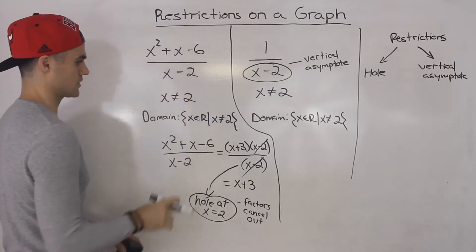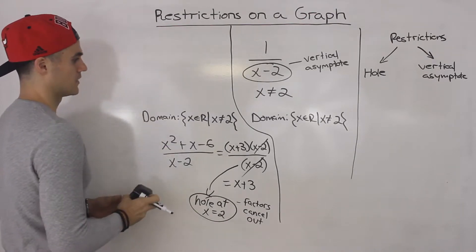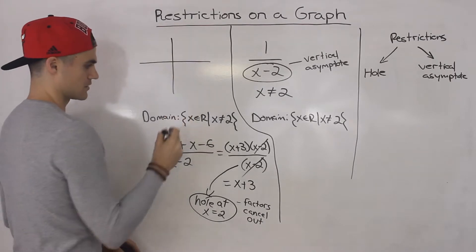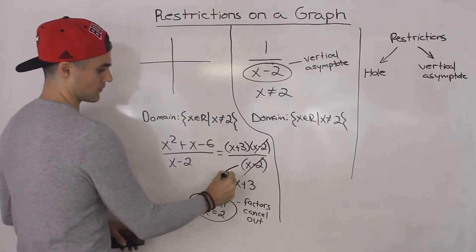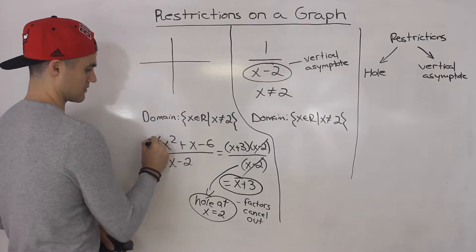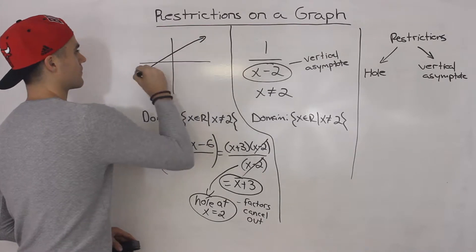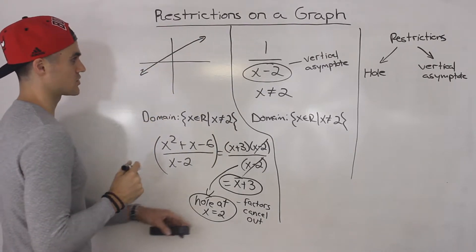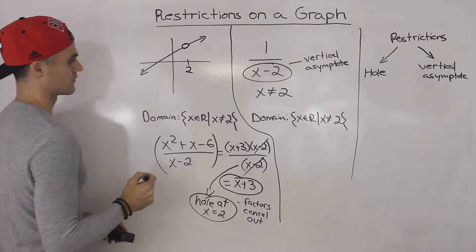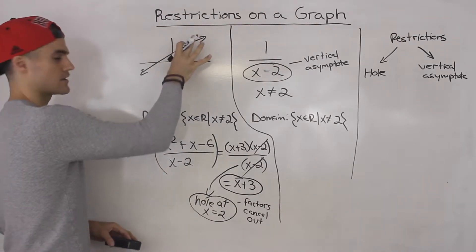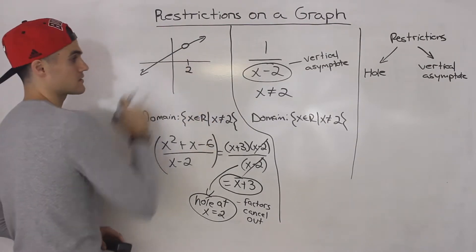So this function here — the rational expression that we were given simplifies to x plus 3. So if we graph x plus 3, that's just a line. But there's a hole at x is equal to 2, so at 2 there's a hole there. Notice that the domain of a line is just x ∈ ℝ, but if there's a hole on the line, x cannot equal where that hole is located.